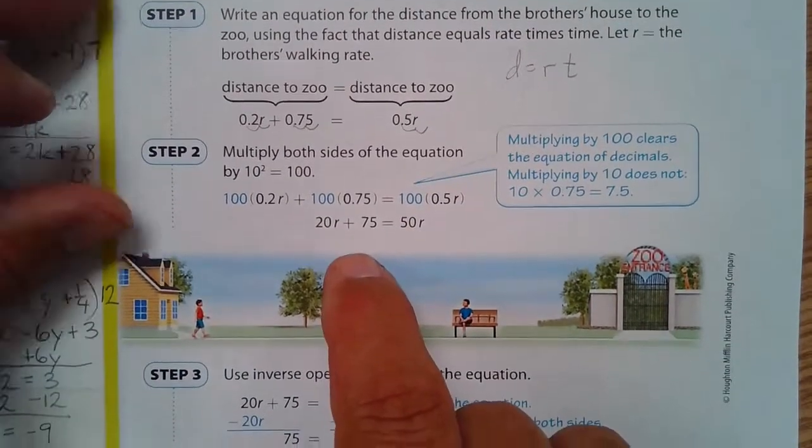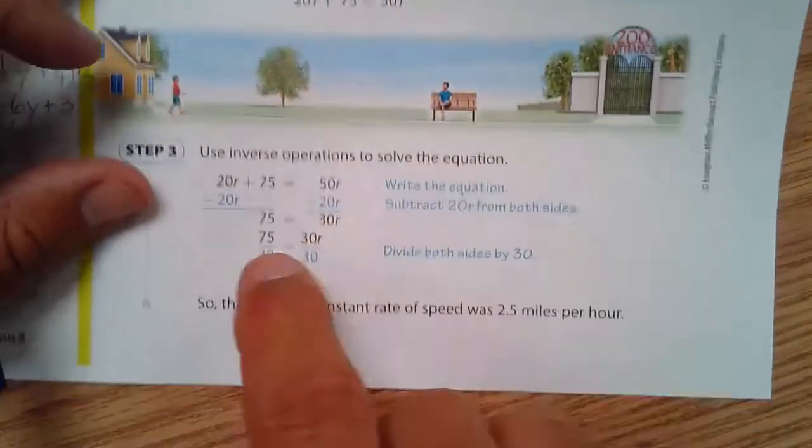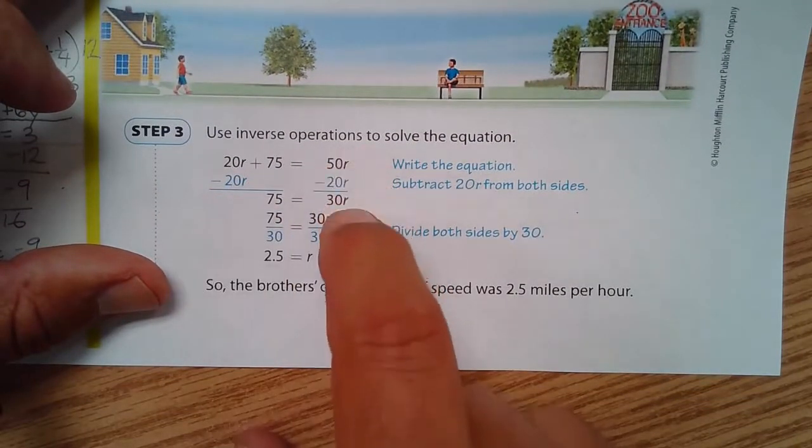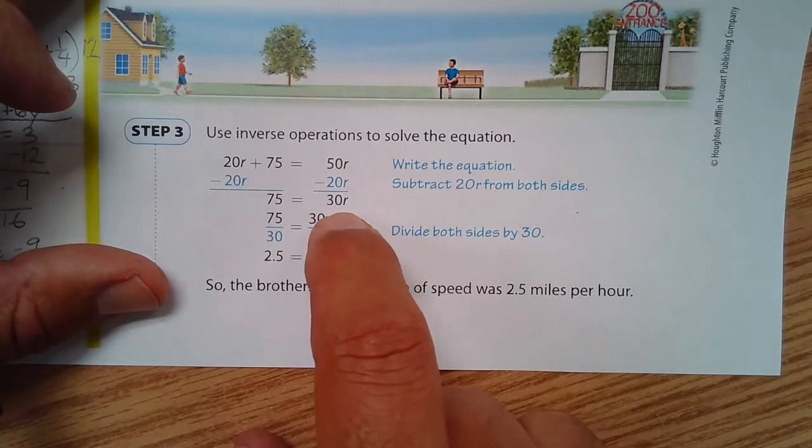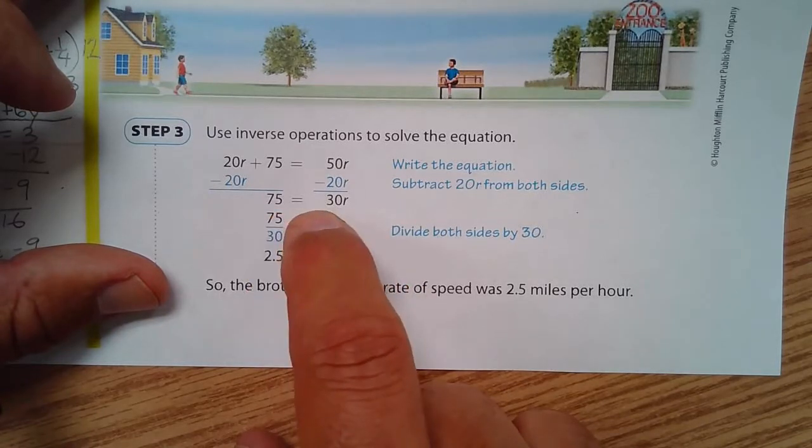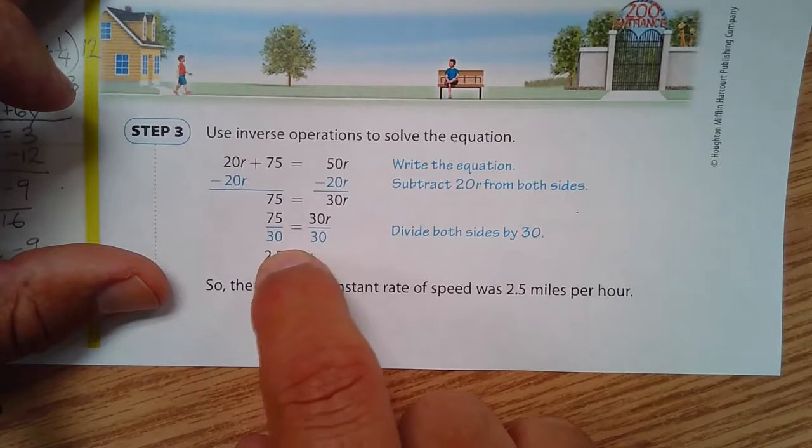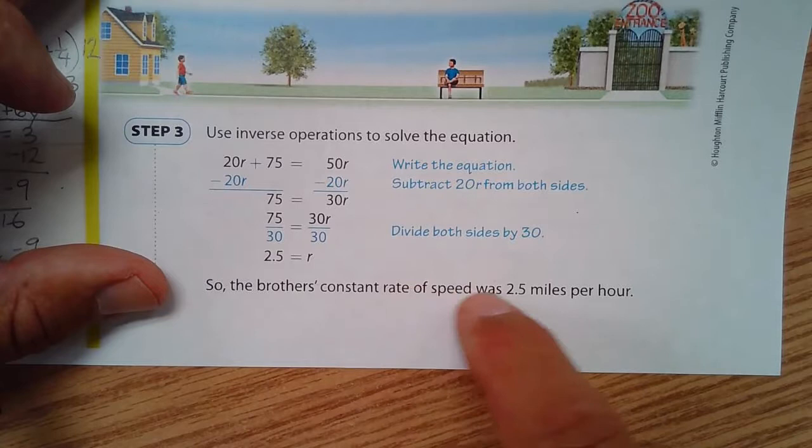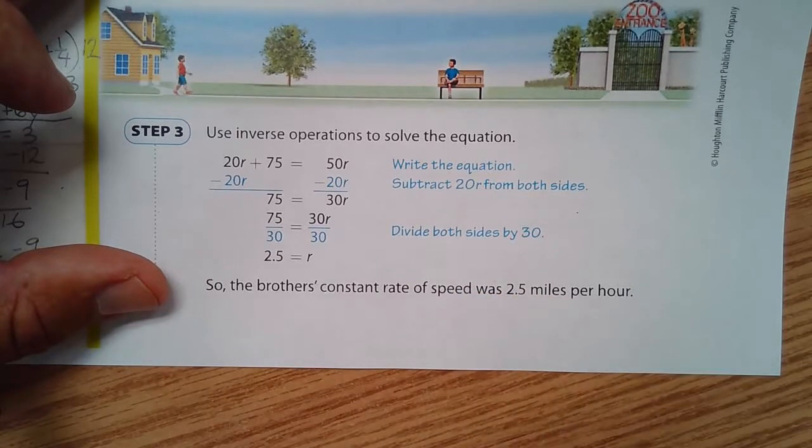And then we use inverse operations. This continues down here, and we subtract 20r. 50 minus 20 is 30. At that point, you have to divide both sides by 30. And 75 divided by 30 is 2.5, or 2 and 5 tenths. So the brothers' constant rate of speed was 2.5 miles per hour.